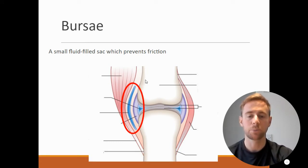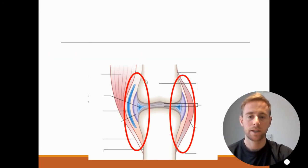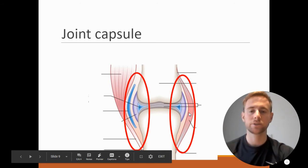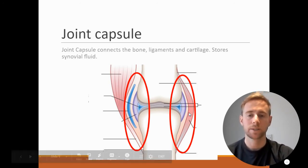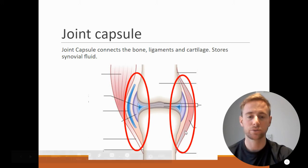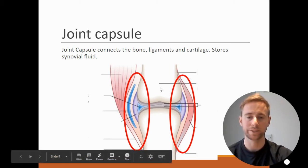Next we have this light pink part here, all the way down to here, and then same on the other side. That is known as the joint capsule. With this, it connects bones, ligaments and cartilage, and it stores synovial fluid. So it is just crucial to the whole structure of the synovial joint.